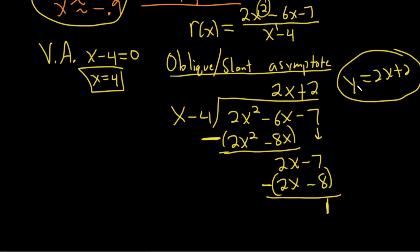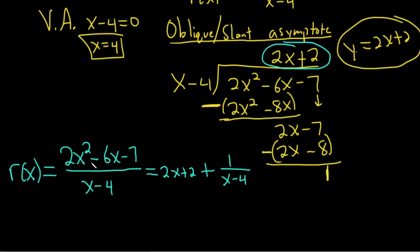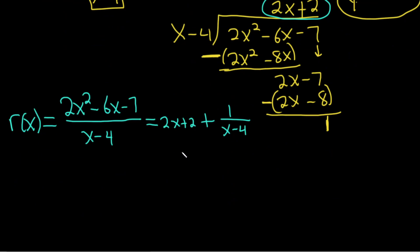Here's the cool thing I wanted to show you. This is not really going to help us in this problem, but let me just show you. If you take your original function, this is useful in calculus sometimes. It's equal to the quotient, so it's this piece here, 2x + 2, plus the remainder, which is 1, over the divisor, which is x - 4. So you can rewrite your function in a convenient way. In calculus, if you had to find the derivative of this function, you could do this and take the derivative in like 5 seconds. This takes more work, this requires a quotient rule. Anyways, we're supposed to graph this thing, so let's do that.